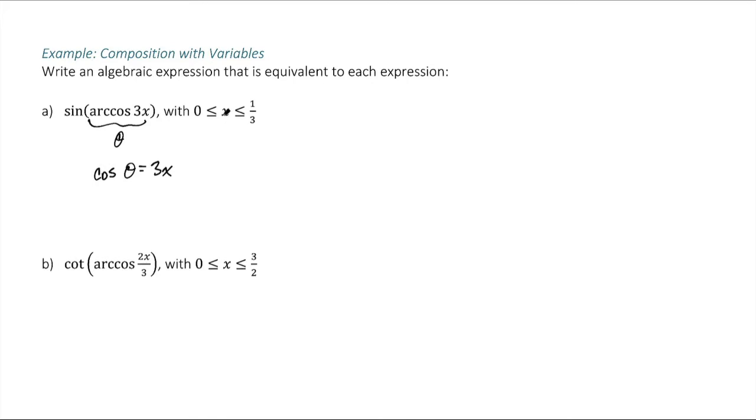Now, we're told here that x is between 0 and 1 third. That's important to know, because I have cosine is equal to a positive number. I know that the arc cosine is always between 0 and pi, but because I know that x is between 0 and 1 third, I know this cosine is a positive number. It's going to have to be in this first quadrant.